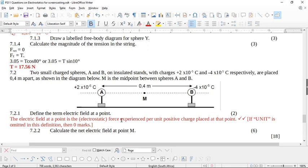Define the term electrical field at a point. The electrical field at a point is the electrostatic force experienced per unit positive charge placed at that point. This memo clearly states, if unit is omitted in this definition, then 0 marks. Please be very careful with your definitions.